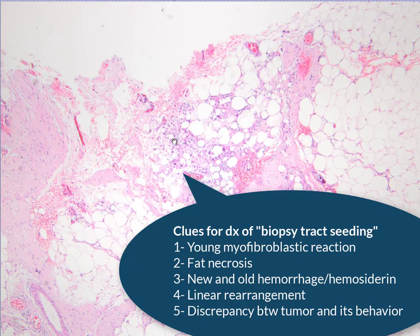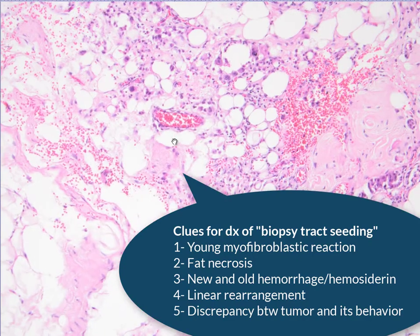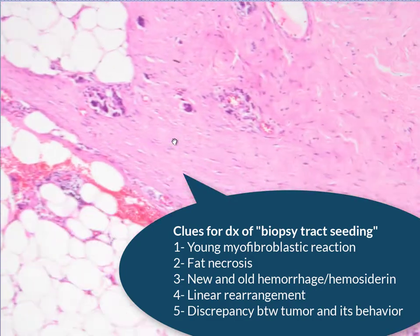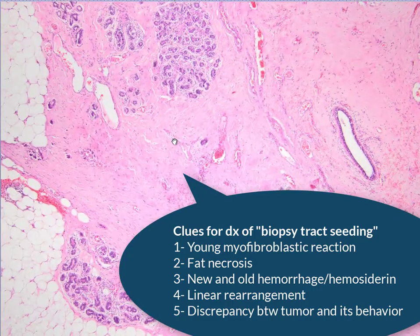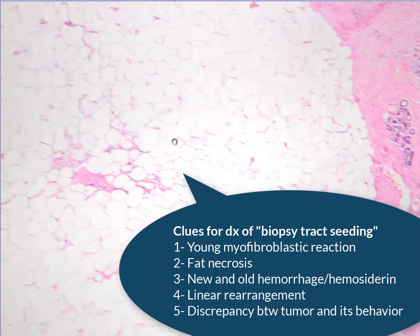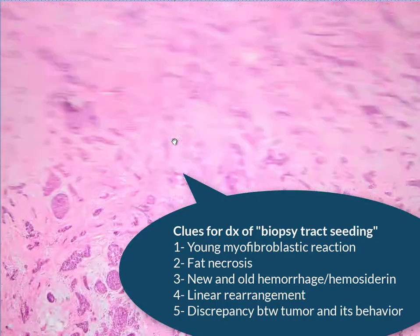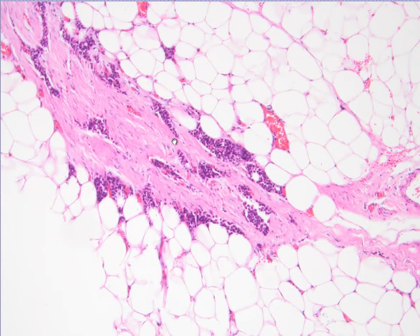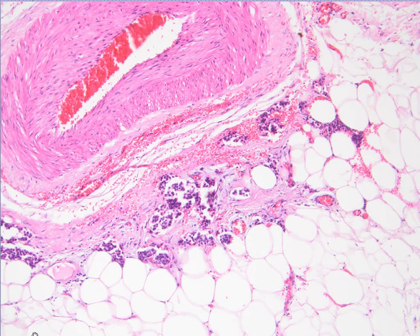Pathologists must be careful and collect information from accompanying morphological clues: you may find fat necrosis as seen here, or early young myofibroblastic proliferation. Also, lymphovascular invasion is not expected in this type of tumor. These are important clues in order to reach the correct diagnosis and ensure correct management of the patient. Thank you very much.